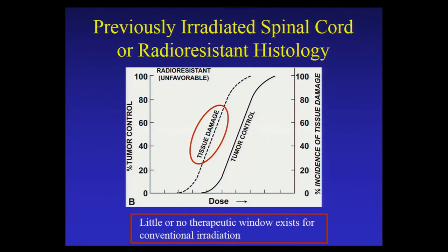However, when we deal with radio-resistant histology — tumors that don't respond to traditional doses of radiation — and with tissues that have been previously irradiated, this can be a particular challenge. If the normal tissue is in the same field as the tumor, there may not be a dose of radiation we can safely deliver to achieve adequate tumor control. This is where particle therapy comes in, and where proton therapy really shines in patients with chordoma, which is considered a radio-resistant histology.